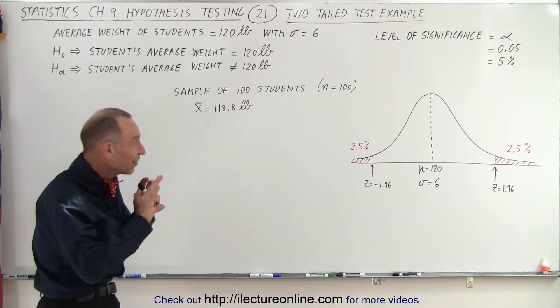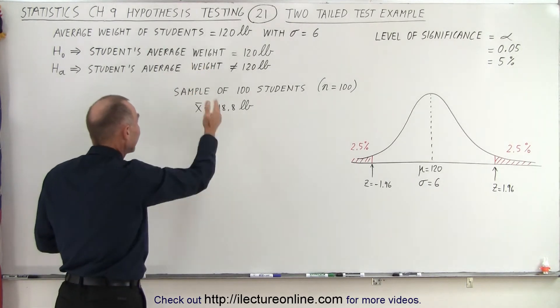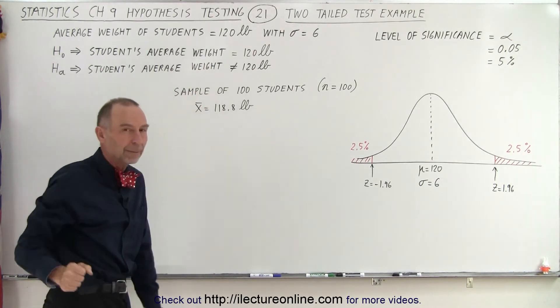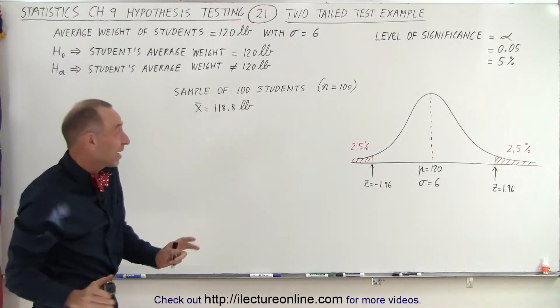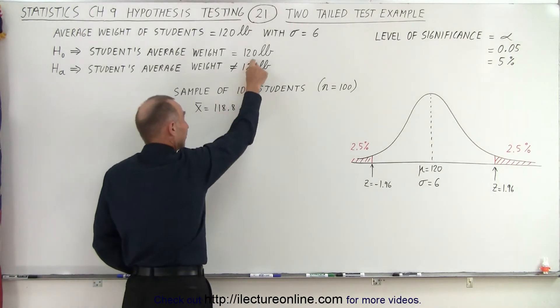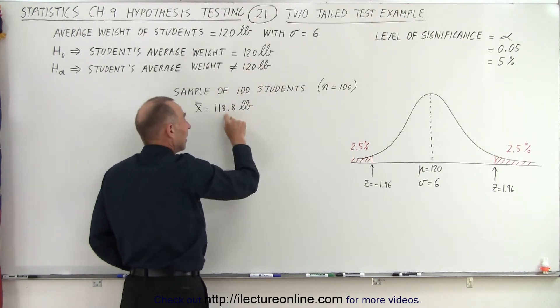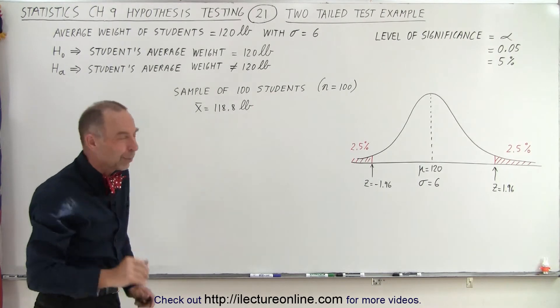Is that enough of a difference between 120 and 118.8 to reject the null hypothesis? It's a big sample size, but also there's not a lot of difference between the mean of the population and the mean of the sample. So let's see where this falls.